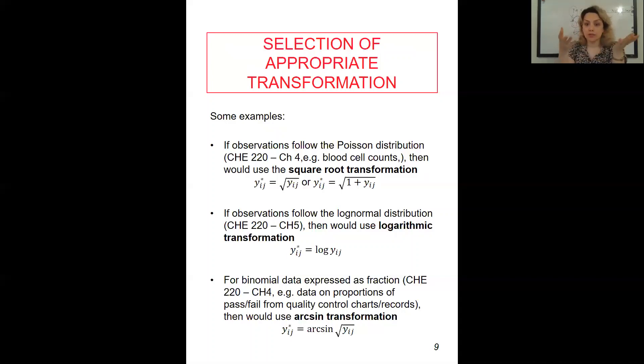If observations follow the log normal distribution. Log normal distribution is one of the distributions that we would use, for example, for the lifetime of the laptop. If you want to find out the distribution of the lifetime of your laptop or computer, we would go with a log normal distribution. It's a continuous distribution. When I say continuous, it means that the main variable that we are talking, the lifetime, has an interval. So you can look at it in Chapter 5 of the CH220. Then we would use logarithmic transformation. And I wrote that on the board as well.